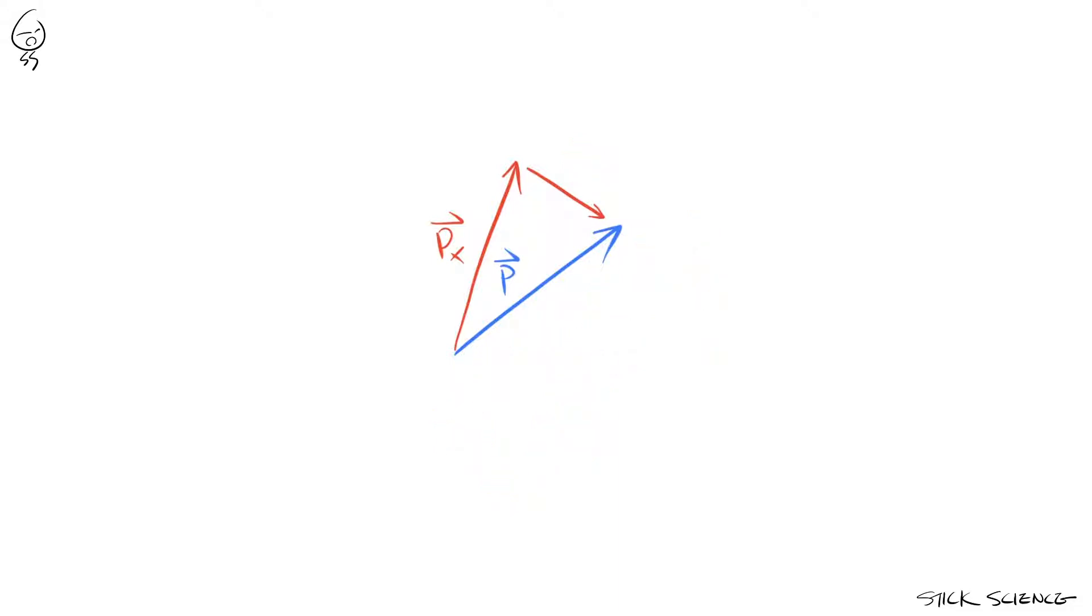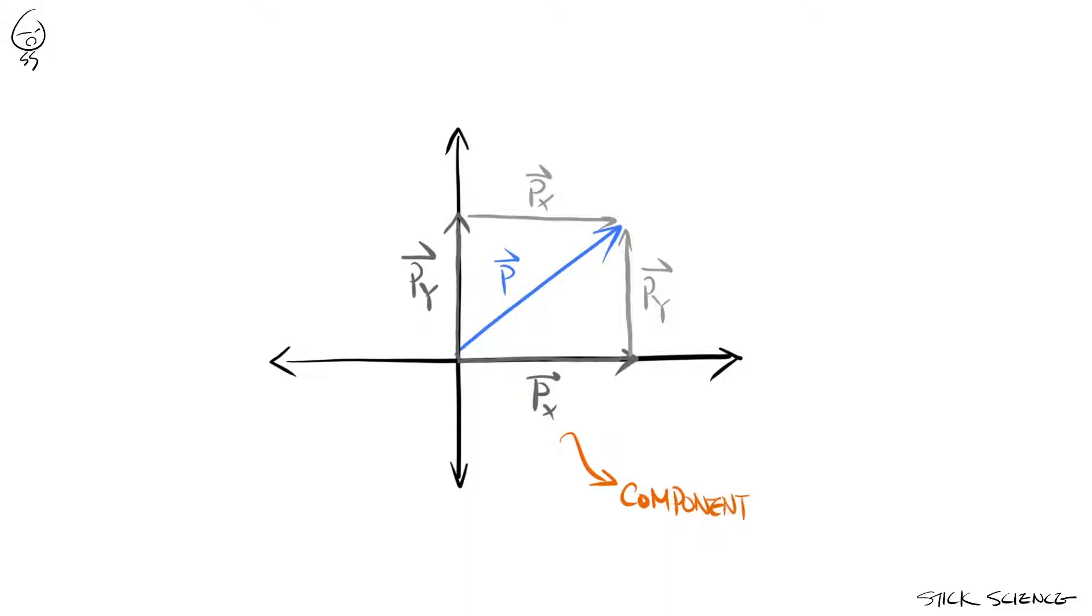But let's find a combination where vectors px and py are vectors along the x and y axis of a cartesian coordinate system, where the tails of vectors p, px and py all begin on the origin of the coordinate system. In such a scenario, vectors px and py are called the component vectors of vector p.